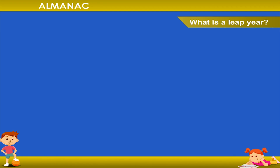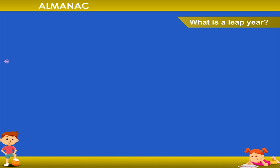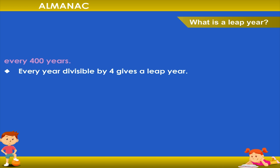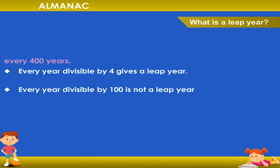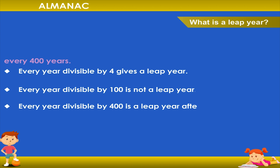What is a leap year? In a Gregorian calendar, there are ninety-seven leap years after every four hundred years. Every year divisible by four hundred is a leap year.